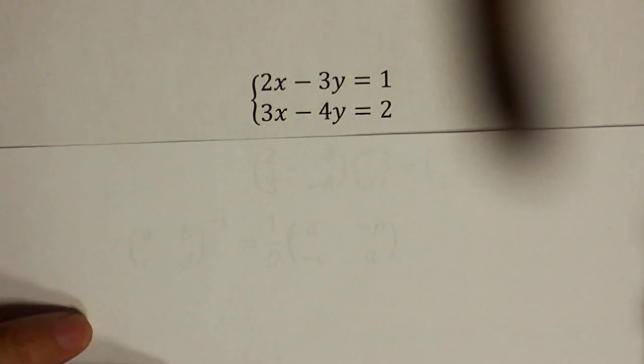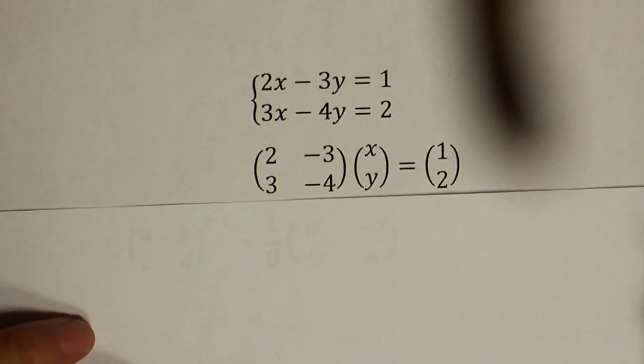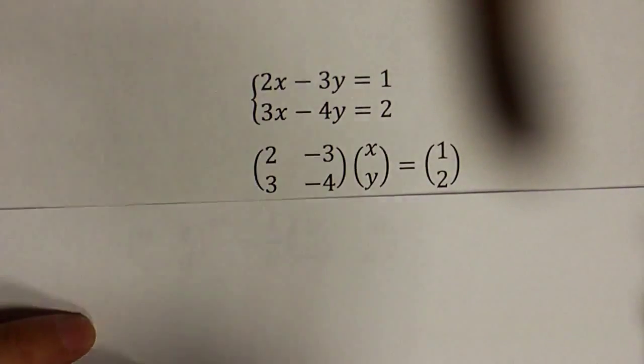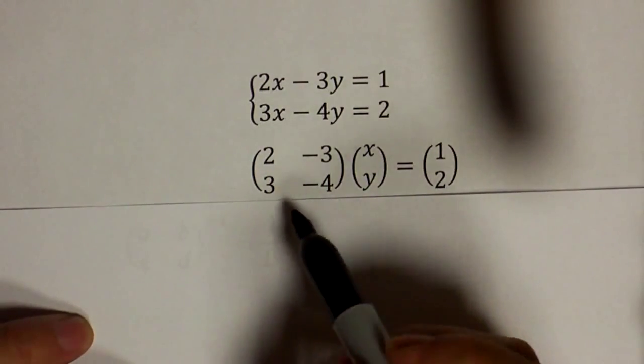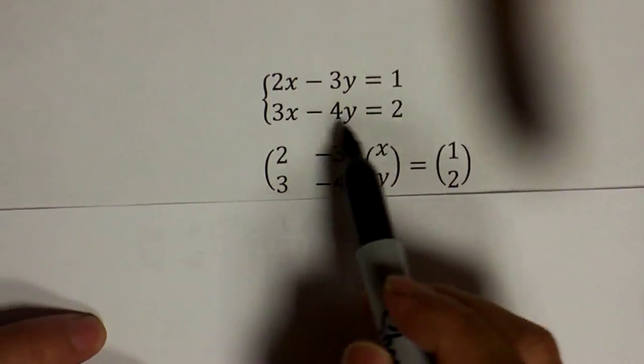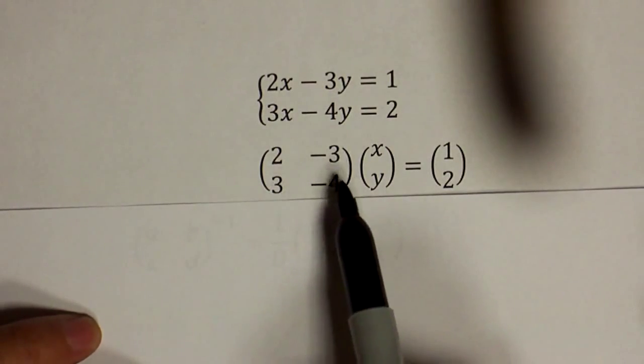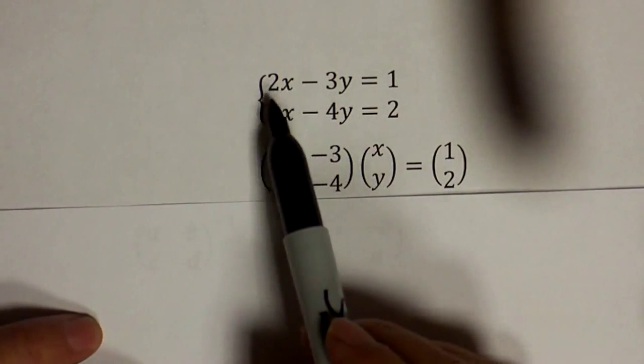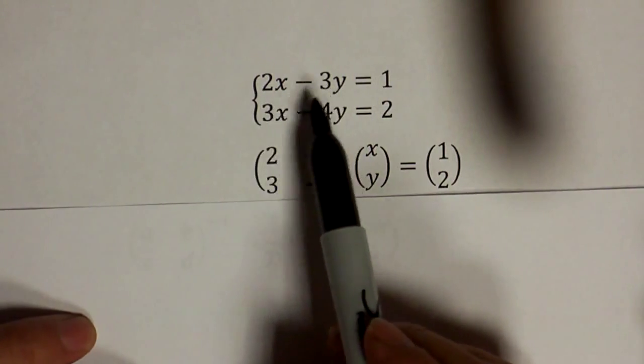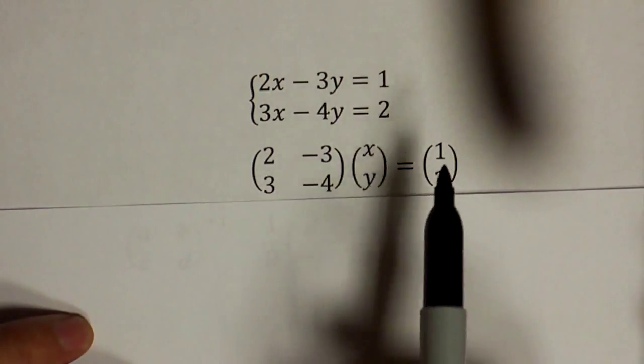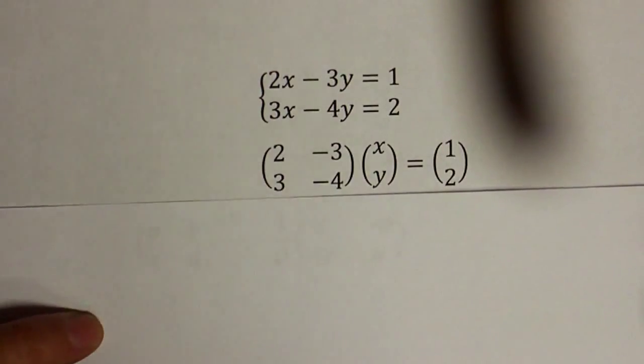The first step to solving this is to rewrite this in matrix form. Notice that these numbers 2, negative 3, 3, and negative 4 are just the coefficients of the left side, and 1, 2 are the constants on the right side.